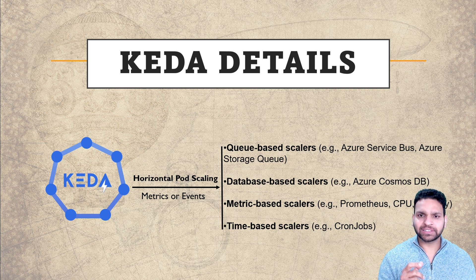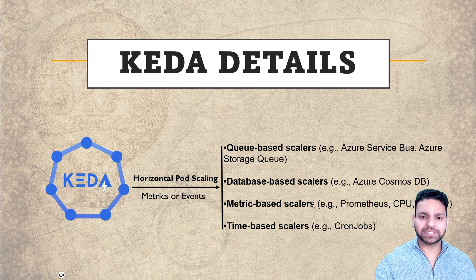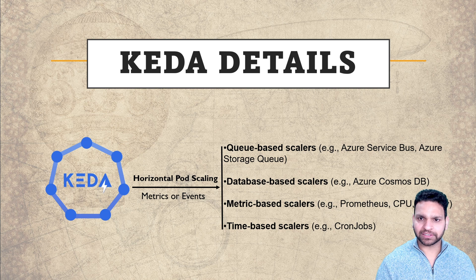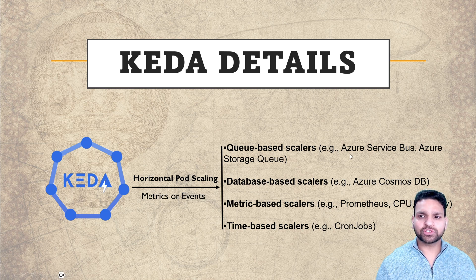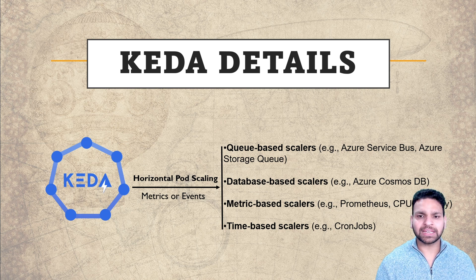KEDA has different scalers — queue-based scalers, database-based scalers, metrics-based scalers, or time-based scalers. Each scaler has different triggers. For the queue-based scaler you can use Azure Service Bus as the trigger, and for metrics-based scalers you can use Prometheus, CPU, or memory as the trigger.